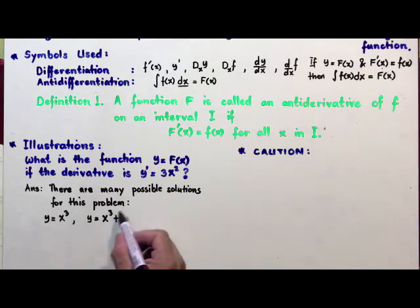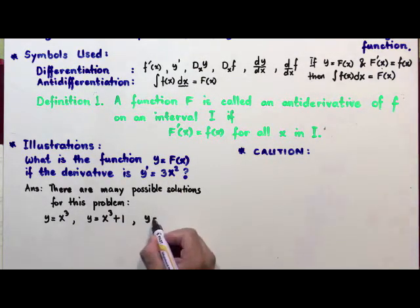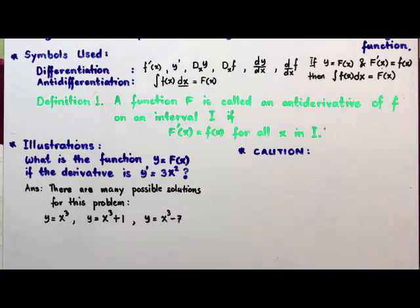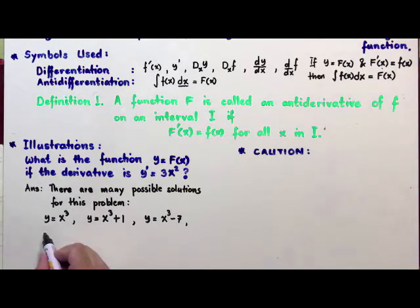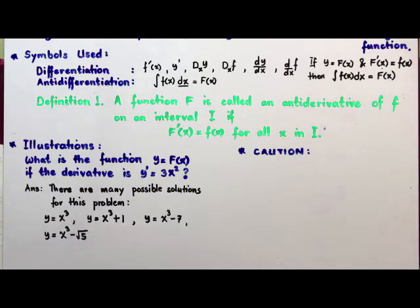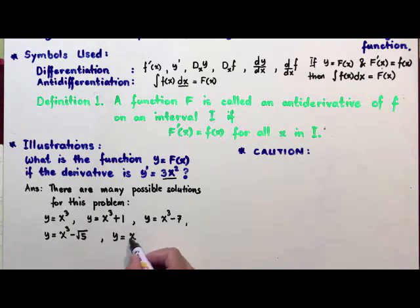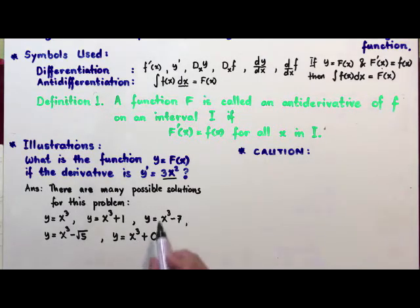Another solution could be y = x³ − 7, because the derivative of x³ is 3x² and the derivative of −7 is 0. Or y = x³ − √5, since the derivative of x³ − √5 is still 3x². More generally, y = x³ + C, where C is a constant — the derivative is still 3x².